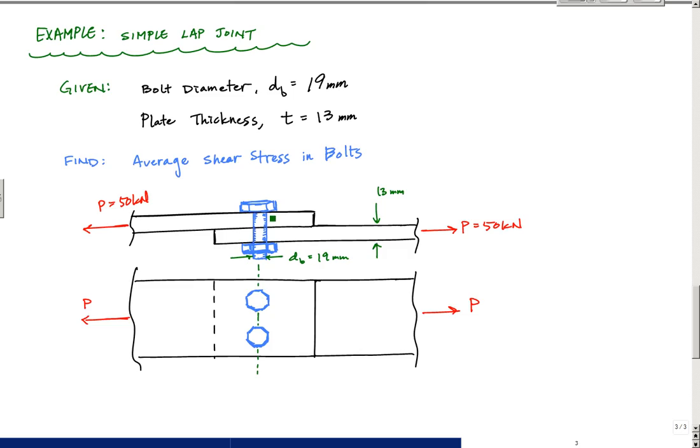The diameter of each of the bolts is 19mm, and the plate thickness is 13mm for each plate. Although that's information we're not going to need in this problem, the average shear stress is what we want to find in each of the bolts.